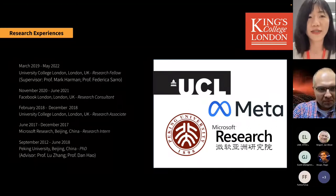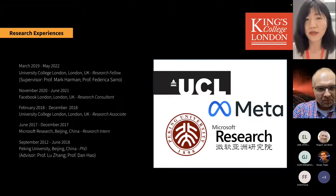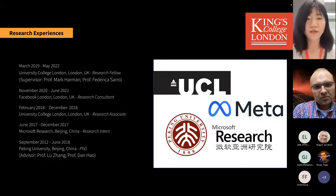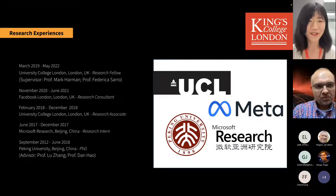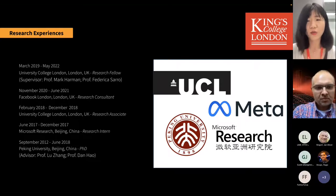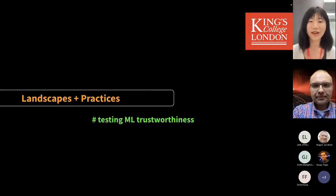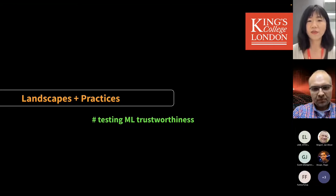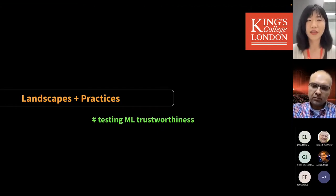For my past research experience, before joining King's I was a research fellow at UCL working with Professor Mark Harman and Professor Federico Sarro. I was also a research consultant for Facebook for about seven or eight months. I got my PhD at Peking University, advised by Professor Lu Jian and Dan Hao, and I did an internship at Microsoft Research Asia. Today's talk covers landscapes and practices of testing ML trustworthiness in two parts: an overview survey, and three of my publications.